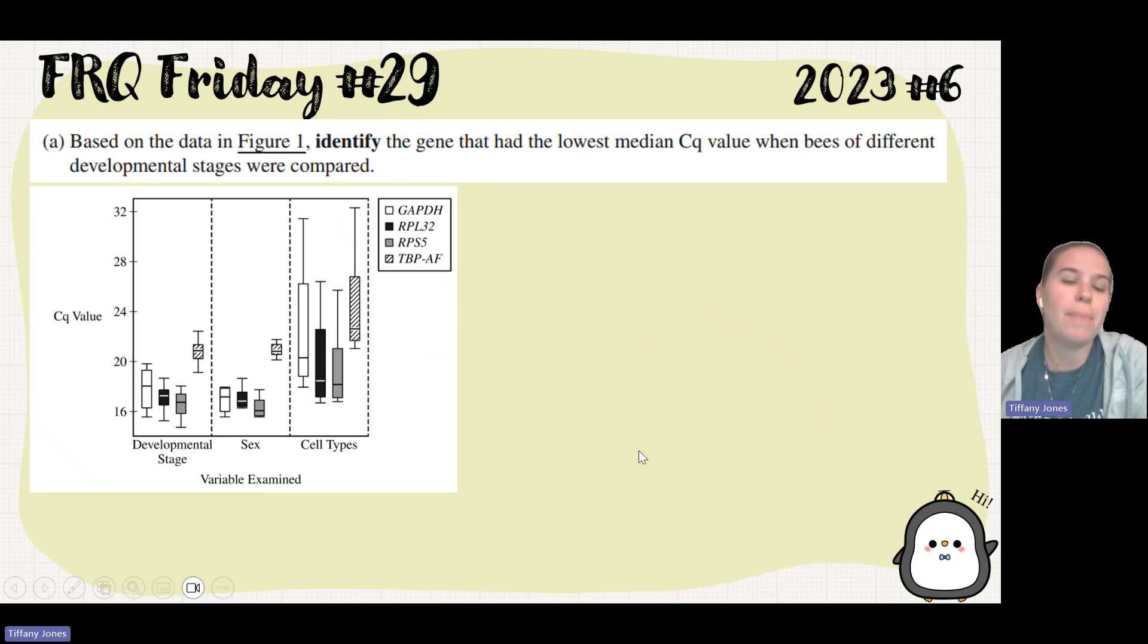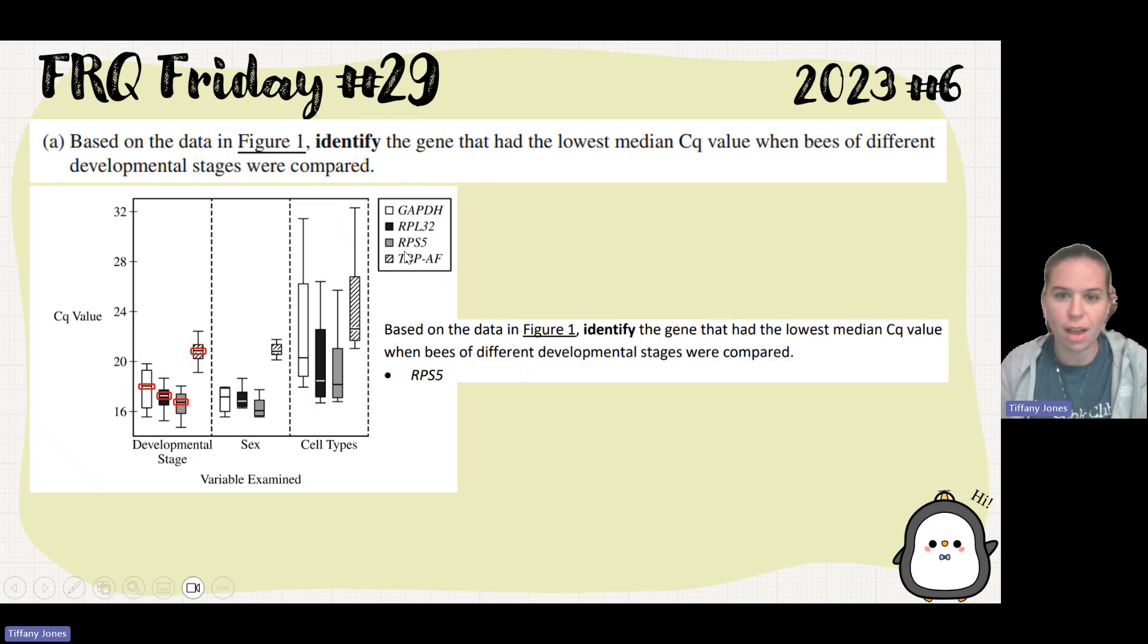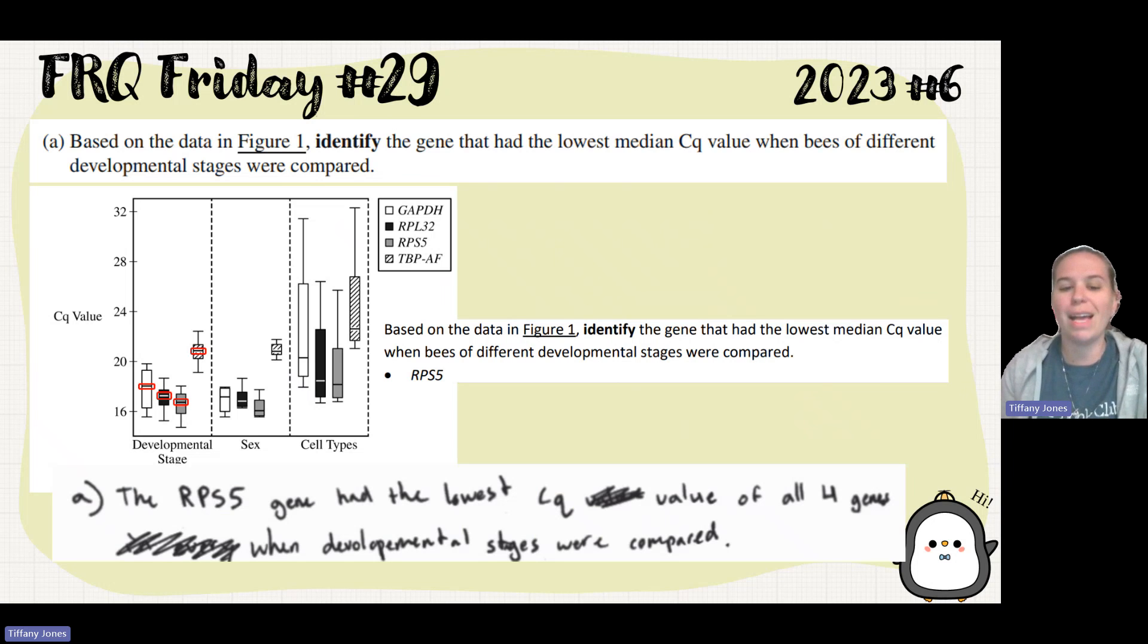So part A asks us, based on the data in figure one, identify the gene that had the lowest median Cq value when the bees of different developmental stages were compared. So this is asking us to look at the median, and it also wants us to look here at the developmental stages. As we already said, the line in the middle shows our median. So if we look here, which one of these has the lowest median value? Well, that would of course be the gray one, which is the RPS5. The student said the RPS5 gene had the lowest Cq value for all the four genes when developmental stages were compared.